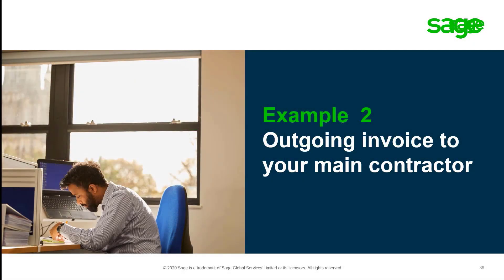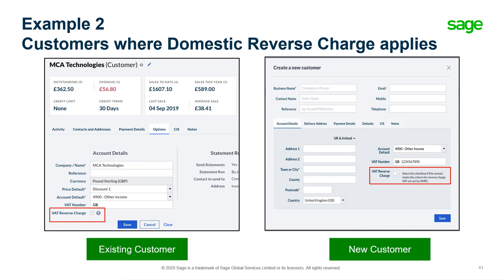Now let's take a look at how to process this for our customer invoices. Just like with suppliers, we have the VAT reverse charge checkbox within existing customers and also when creating new customer records. The same rules apply — if the CIS details and the VAT registration number have been entered, this will be automatically selected. This can be deselected if you know domestic reverse charge will not apply, for example if you know that you're dealing with the end user.